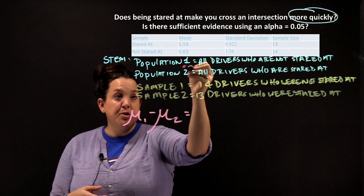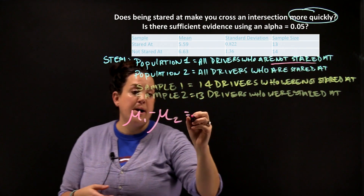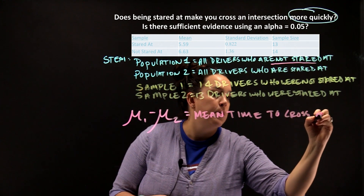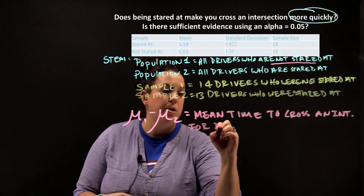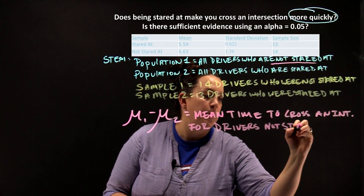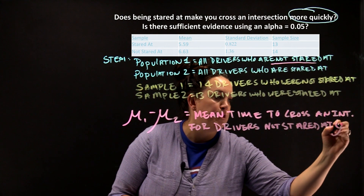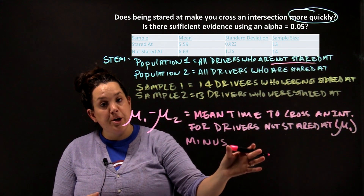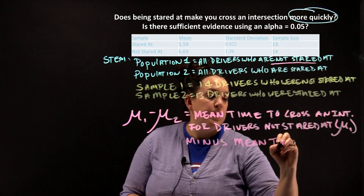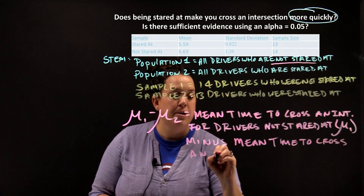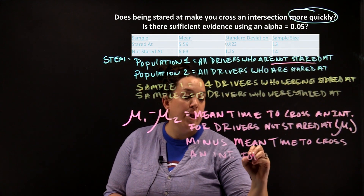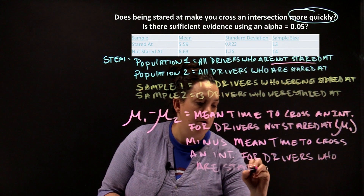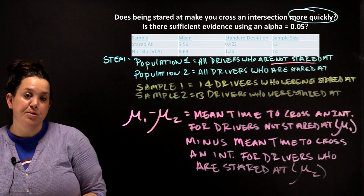We'll define mu sub one: since group one corresponds to population one, mu sub one is the mean time to cross an intersection for drivers not stared at. Then we subtract from that mu sub two, which is still mean time to cross an intersection, but now for the population of drivers who are stared at. I'll put mu sub one and mu sub two in parentheses behind each definition to emphasize which group each belongs to.